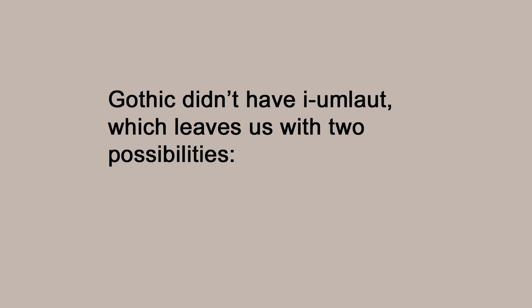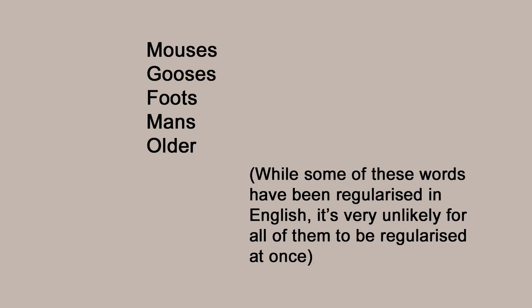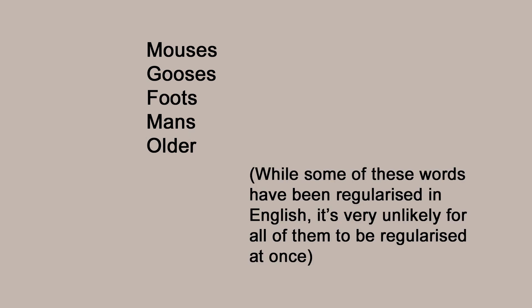Some of you will wisely point out: if all modern Germanic languages have this vowel alternation between singular and plural, why don't we reconstruct it in proto-Germanic? The answer is that not all attested Germanic languages have it. Gothic, the earliest written Germanic language, doesn't seem to have i-umlaut. So either the vowel alternation appeared after Gothic split off from the rest, or Gothic underwent a massive regularisation that neutralised all these alternations at once. From what we know about language development, the first option is far more likely.